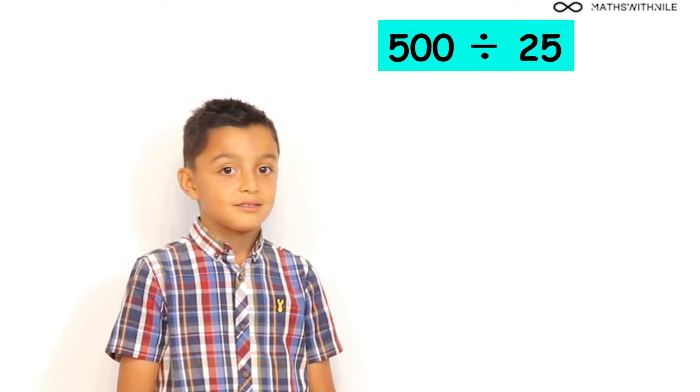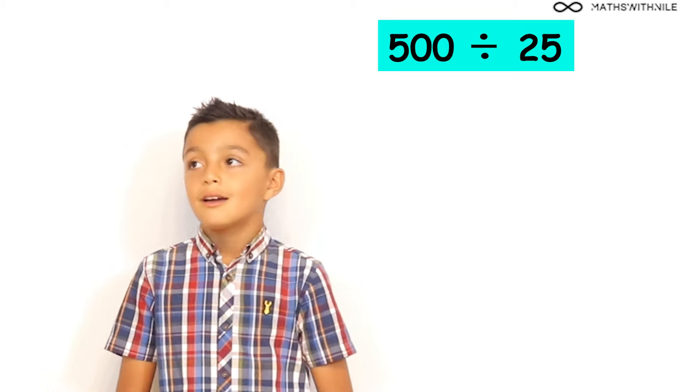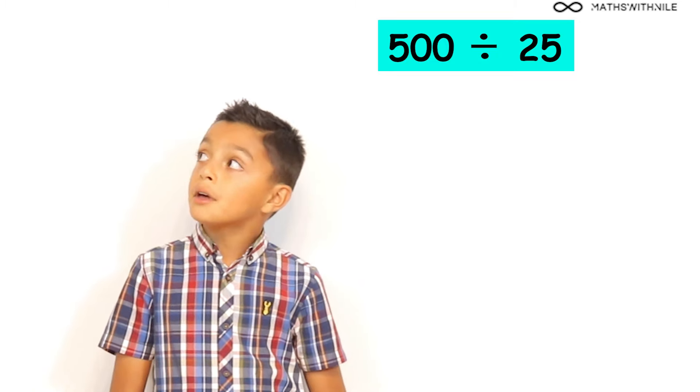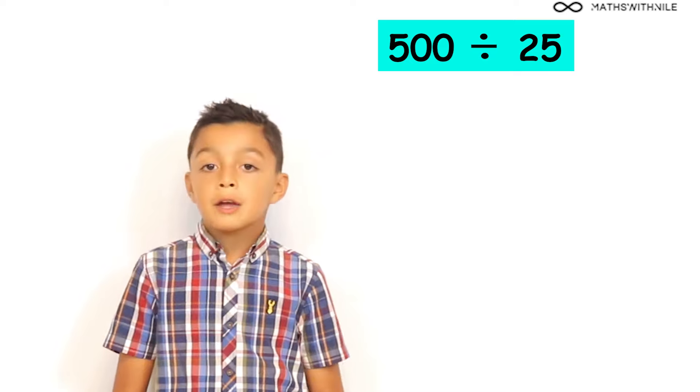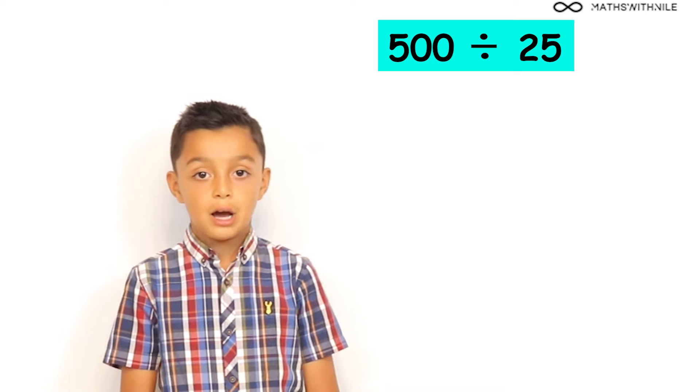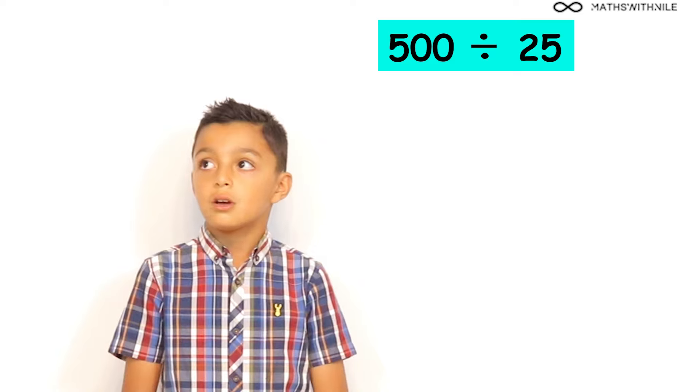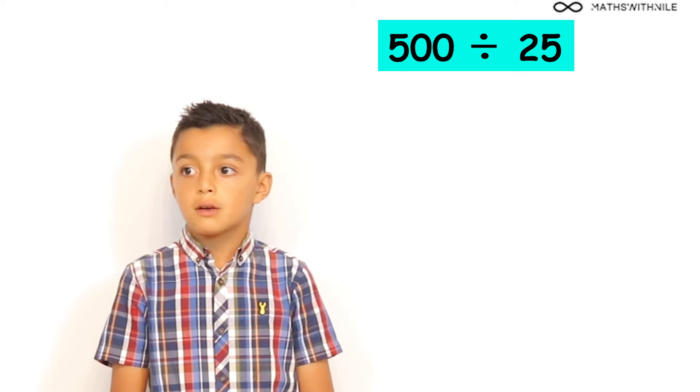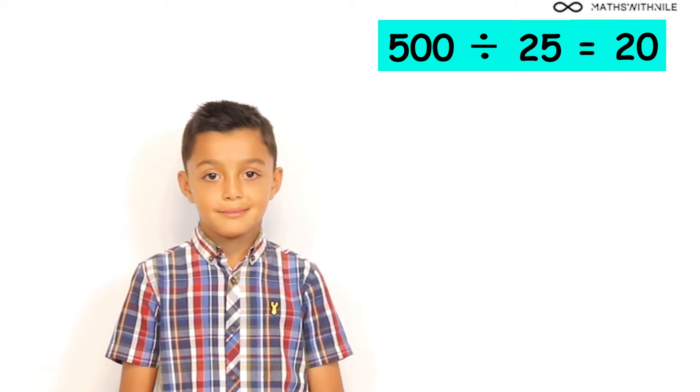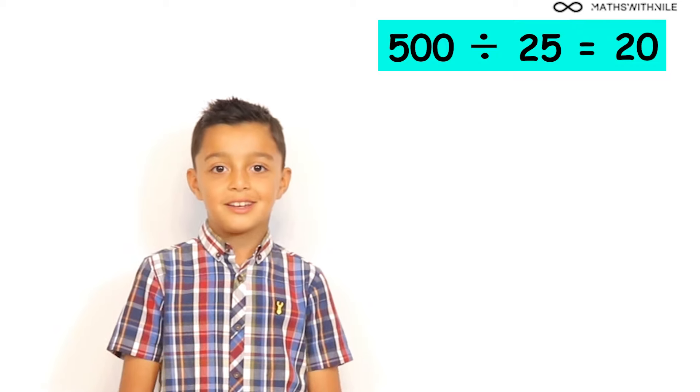Last one. Okay. What is 500 divided by 25? So, 5 times 4, because there are 4 25s in 100. 5 times 4 is 20. Excellent Niall. So, the answer is 20. Very good.